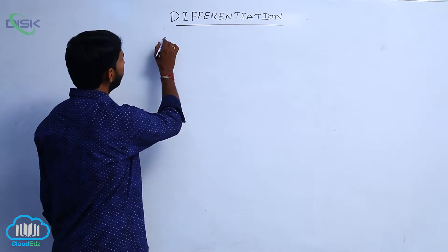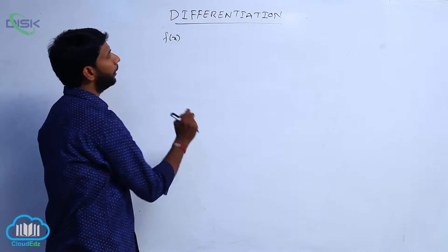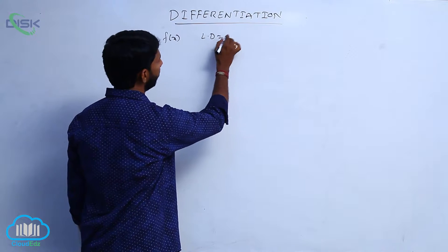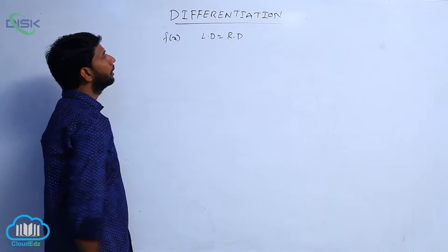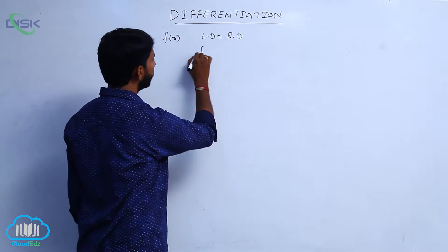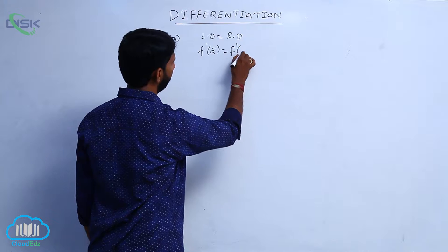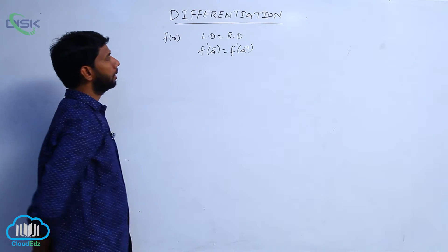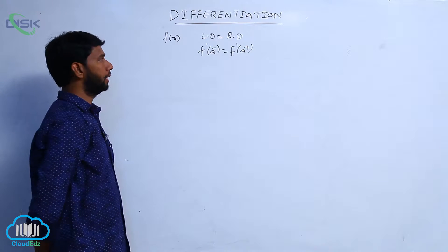Suppose the function f of x has a derivative to exist. When the left derivative of a function is equal to its right derivative, then the function has a derivative to exist. That is, f dash of a minus is equal to f dash of a plus — then the function has a derivative to exist.